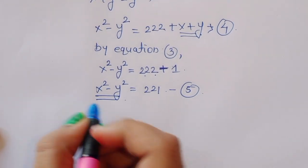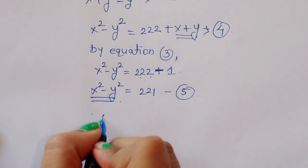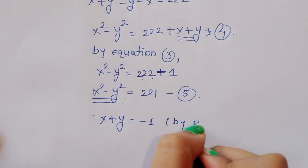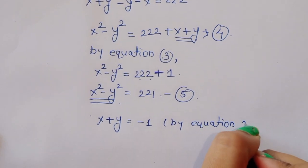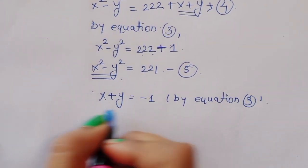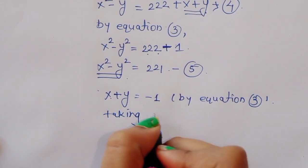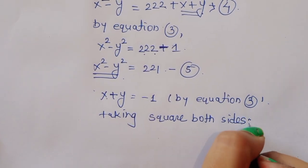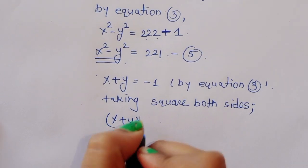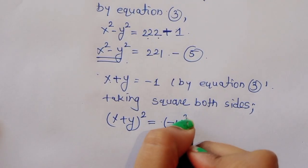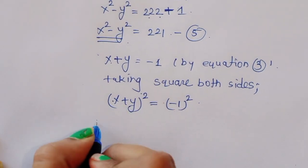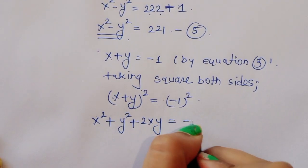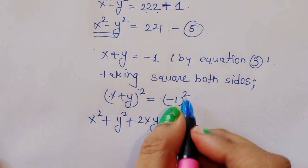Now, taking equation 3: x plus y equals minus 1, and squaring both sides. We get (x plus y) squared equals (minus 1) squared. Expanding the left side: x squared plus y squared plus 2xy equals 1.